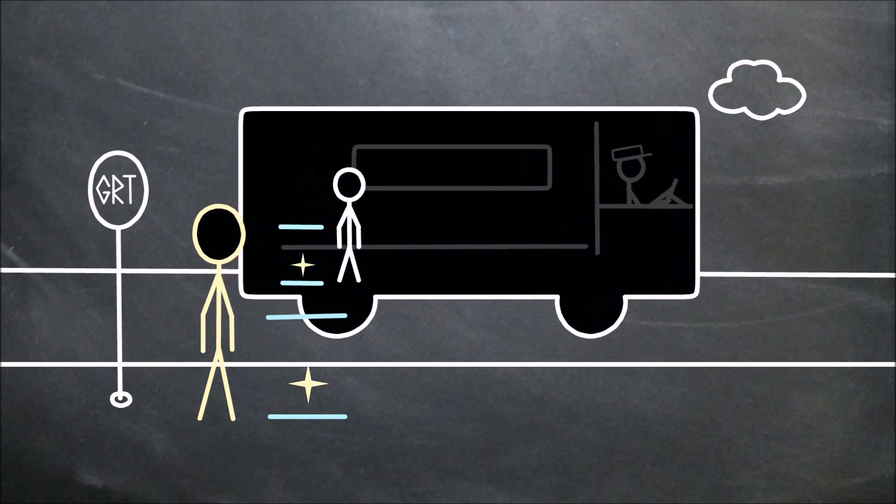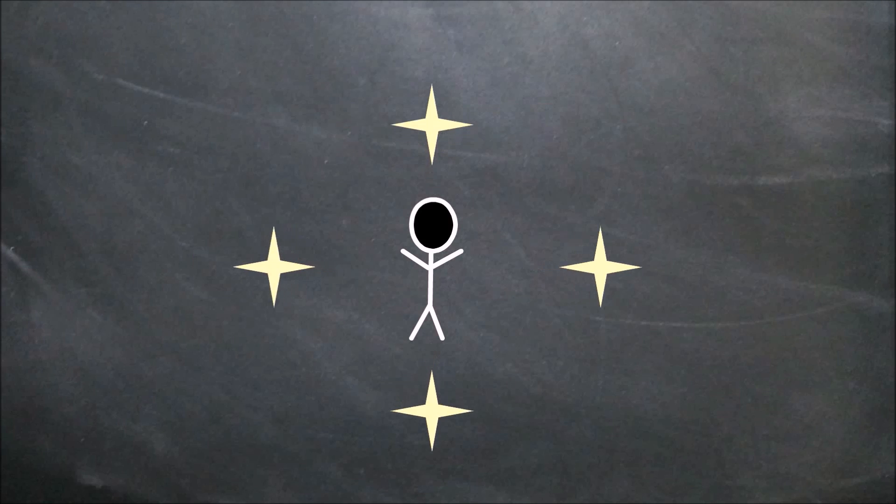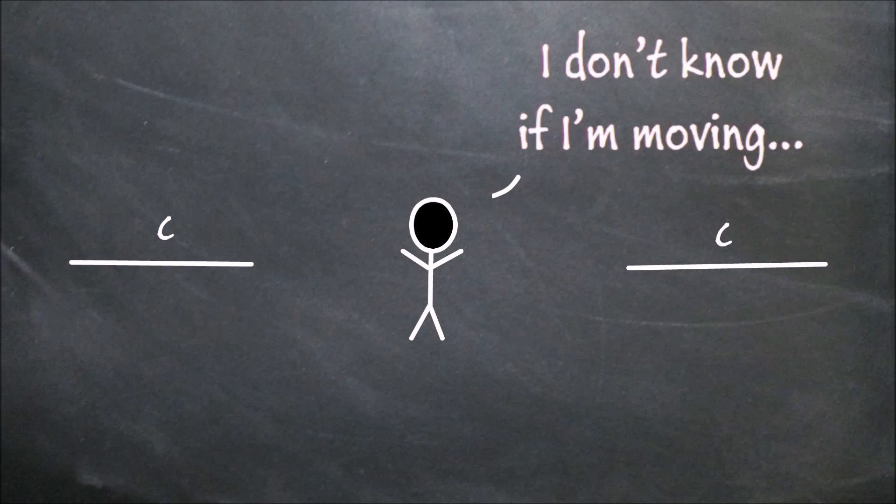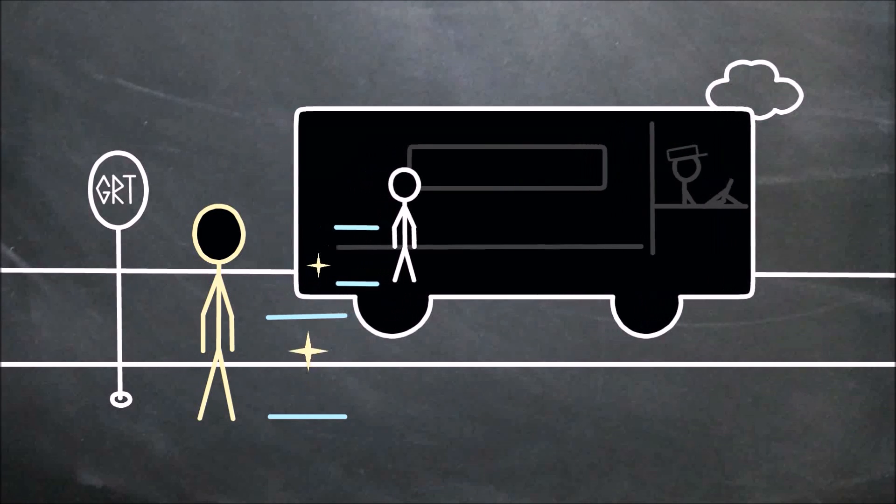But if it did, it would need to travel faster than light just to keep up with you, because you're traveling faster than light. But that goes against the fact that your friend is supposed to see the light traveling at c, which is the very point we started this entire process with.